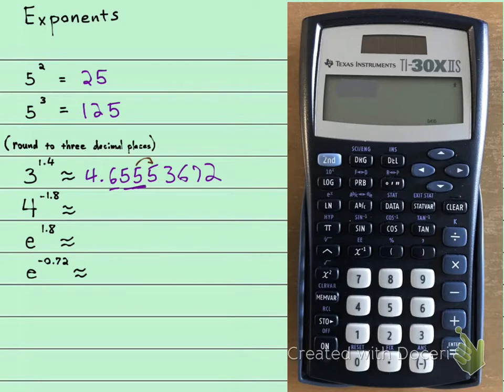I look to the right. 5 or more, raise the score. So that 5 is going to turn into a 6. So I'm going to get 4.656.